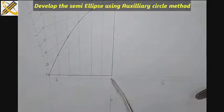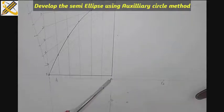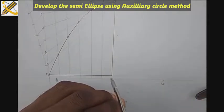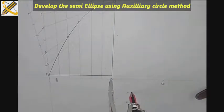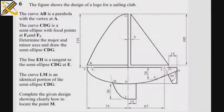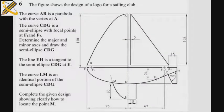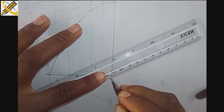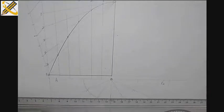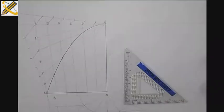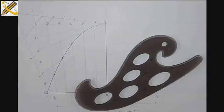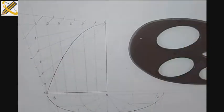Take note, a semi-ellipse. So this is my minor axis. So having plotted the points, the next thing is to draw out my elliptical curve. So I've developed the ellipse CDG.